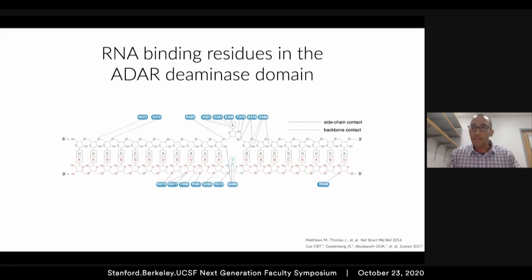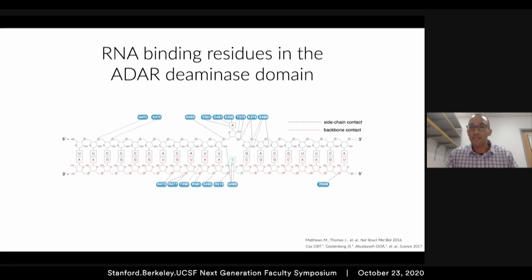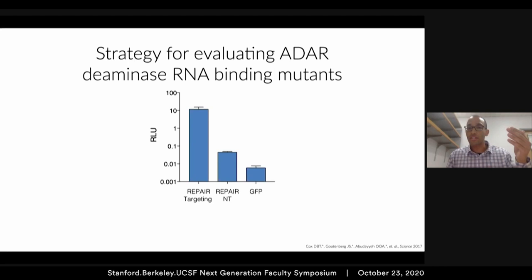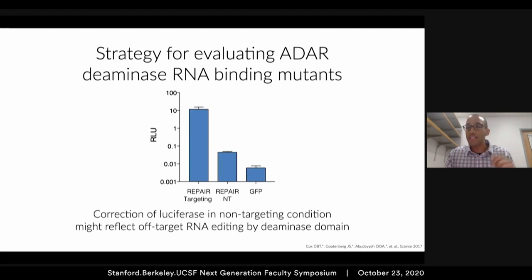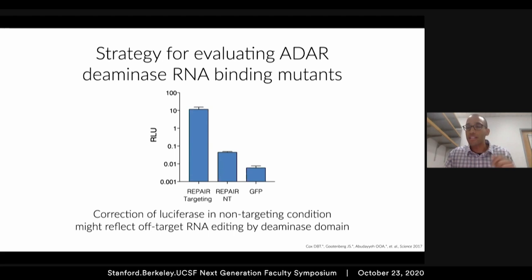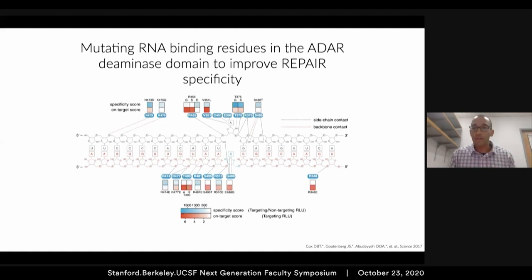To screen through all these mutations, it's not practical to do an RNA sequencing experiment for every mutation. So we took advantage of a phenomenon we noticed from earlier experiments: when we used REPAIR to correct a broken luciferase gene, in the on-target condition we saw very high rates of correction, but with a non-targeting guide we saw some level of correction greater than constructs completely lacking the Cas13-ADAR fusion. We thought this might reflect off-target editing, and we could use it as a proxy to screen mutations in the form of something called a specificity score. Going through all these mutations, we ultimately found the T375G mutation.